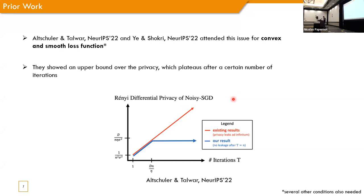So, two concurrent works also address this issue for convex and smooth loss functions. And what they show, the result is in the blue line here. They show an upper bound over the privacy, which plateaus after a certain number of steps. In our work, we show something that is a bit different.